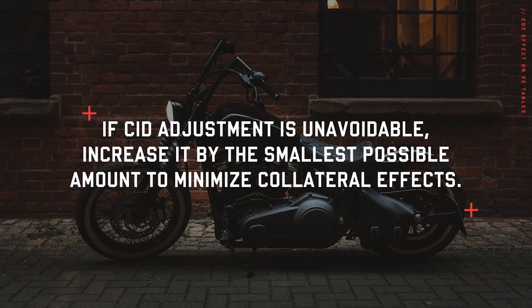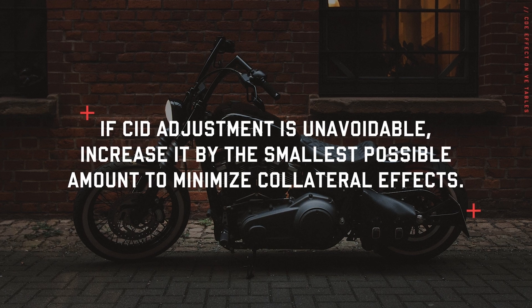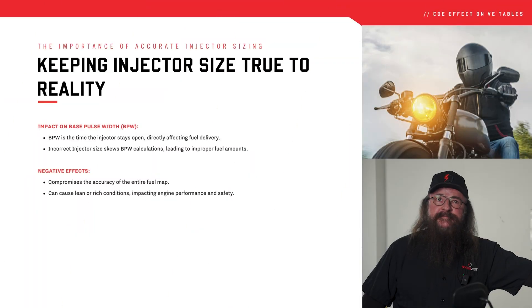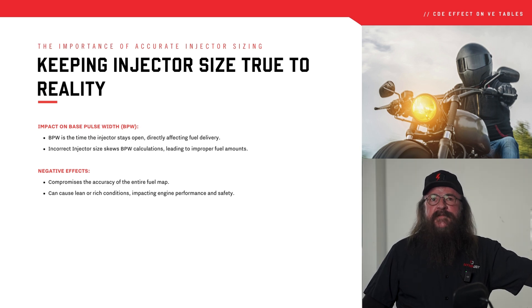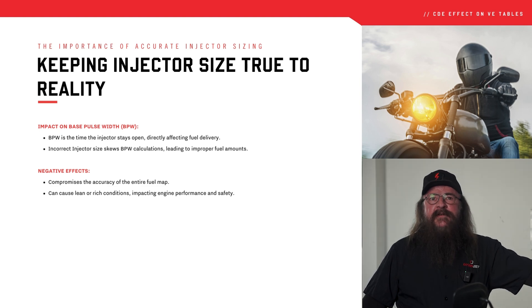Another common mistake is adjusting the injector size to manage VE clipping. The size of the injector directly influences the base pulse width, which is how long the injector stays open during each cycle. If you fudge this number, you're skewing the BPW calculations, and this can lead to very inaccurate fuel delivery — too much, too little, varying by altitude — it compromises the entire fuel map.